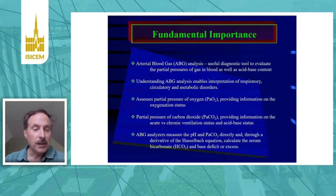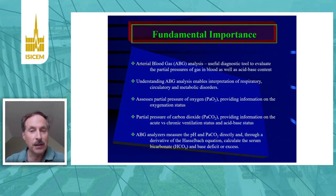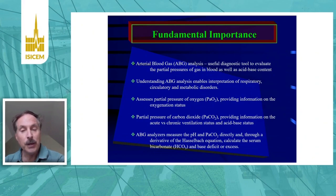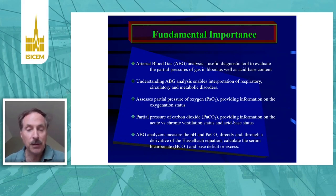Blood gas analysis is useful to evaluate partial pressure of gas in blood as well as the acid-base content. It enables us to interpret respiratory, circulatory, and metabolic disorders. It can give us information on the partial pressure of oxygen in our bloodstream and thus provide further information on diffusion issues within the lungs. It particularly gives us a reading on the partial pressure of carbon dioxide, which is highly important in our ability to interpret the patient's ventilation status. Given that the pH is dependent on acid-base factors within the plasma, we can derive information about the serum bicarbonate and base deficit or excess.